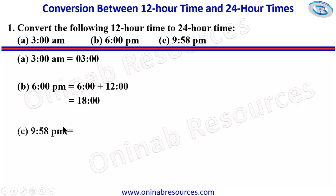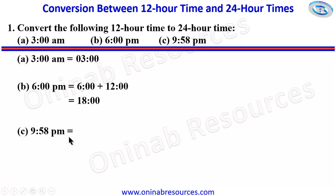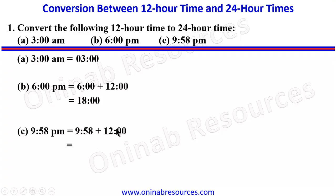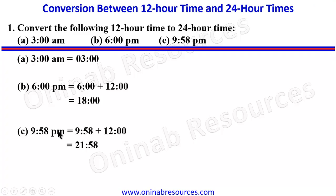For C: 9:58 p.m. This is again p.m., so we add 1200, giving us 9:58 plus 1200. Our focus is on the hours: 9 plus 12 gives 21. So it will be written as 21:58 hours, which is equivalent to 9:58 p.m. This is 12-hour time, and 21:58 is the 24-hour time.